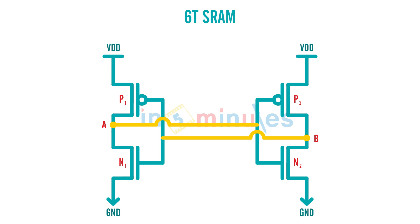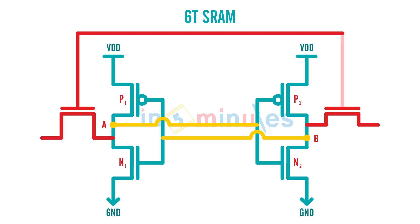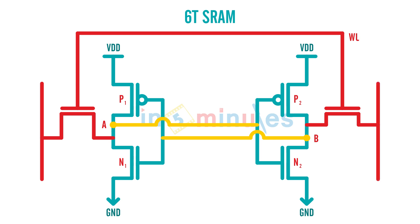At node A and node B, let's connect an additional NMOS transistor each. We'll see what is the use of this very quickly. What we are going to do is short the inputs of both these NMOS transistors and call this the word line. One node of both these NMOS transistors is still hanging in the air, so let's connect them to wires. Let's call this one bit and this one bit bar.